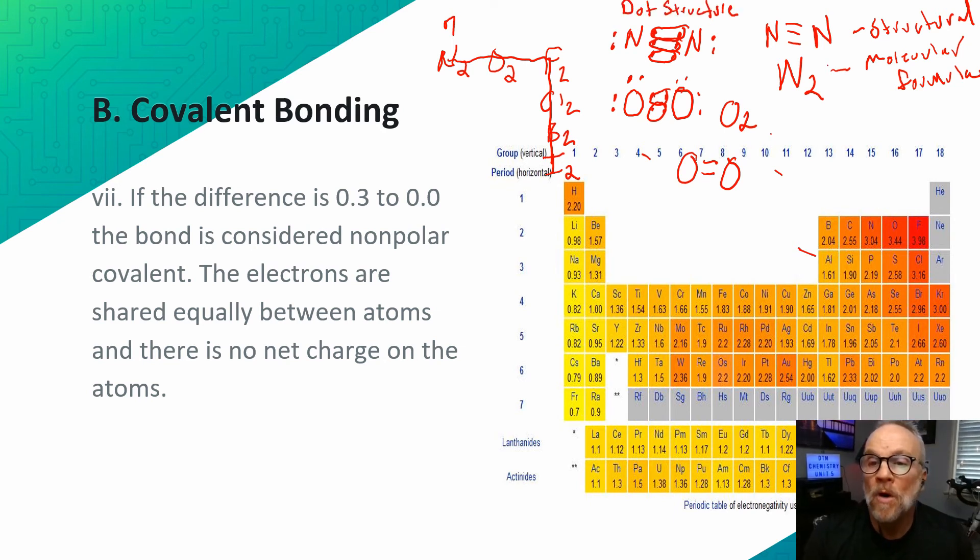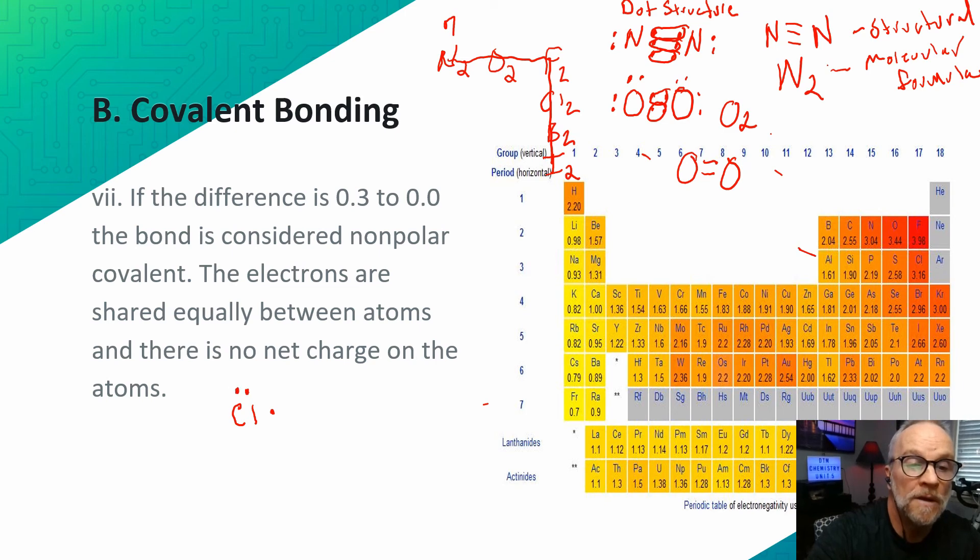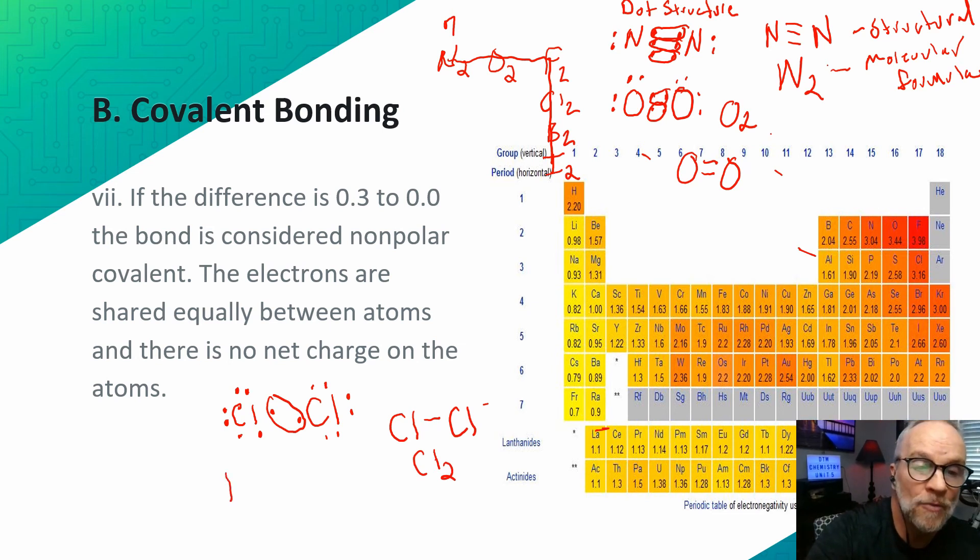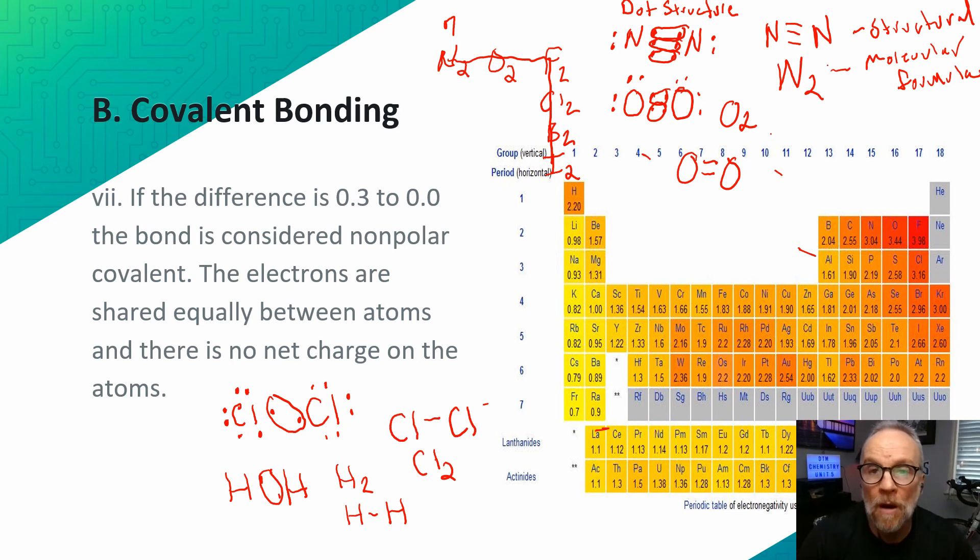So you have the structural and molecular formulas there, and the dot structure. What about fluorine, chlorine, bromine, iodide, and hydrogen? Chlorine has seven valence electrons, as do all the other elements in group 17. So they form a single bond between them. You'd have Cl2. Hydrogen only has one valence electron, so it can only share one. So it forms a single bond as well. Those are examples of single bonds, double bonds, and triple bonds.